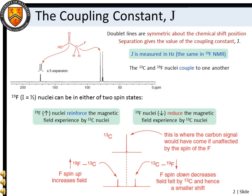As a consequence of nuclear spin coupling between the fluorine and carbon atoms, the carbon NMR signals have been split into two lines. This splitting pattern is known as a doublet. The doublet lines are symmetric about the original chemical shift position, and the separation between lines gives the value of the NMR coupling constant J.